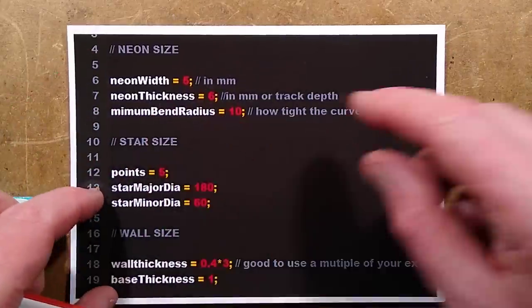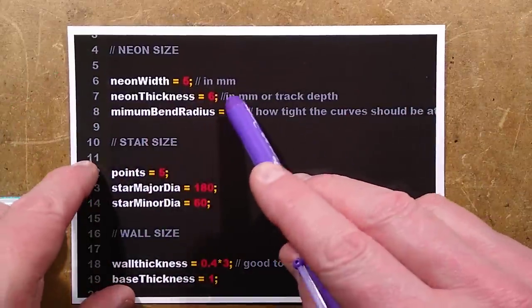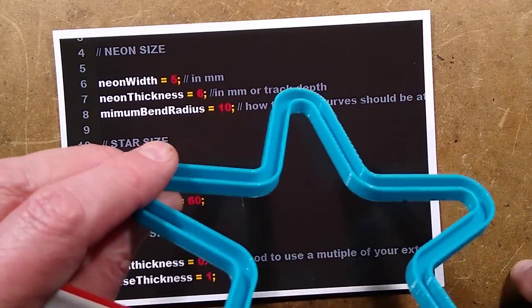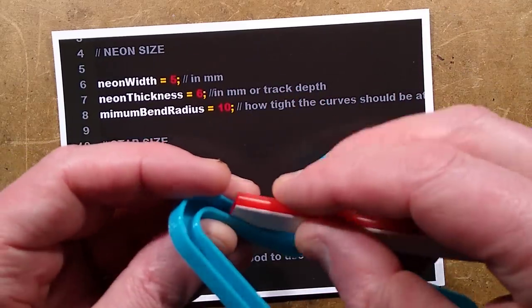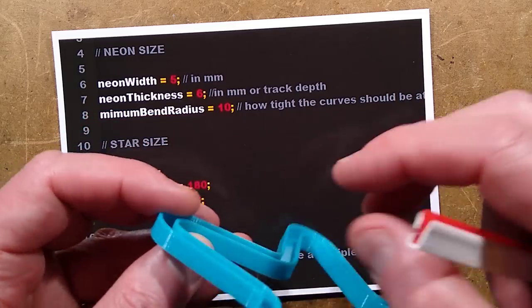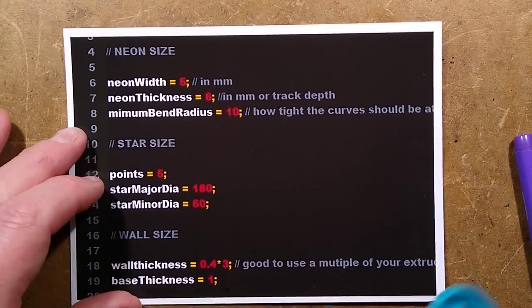NEON thickness. Keep in mind these were prototype scripts. It's better looking at the description here. It's the track depth. That is how deep this track is and basically how deep into that the NEON will sit. The taller you make it, the taller the star is.